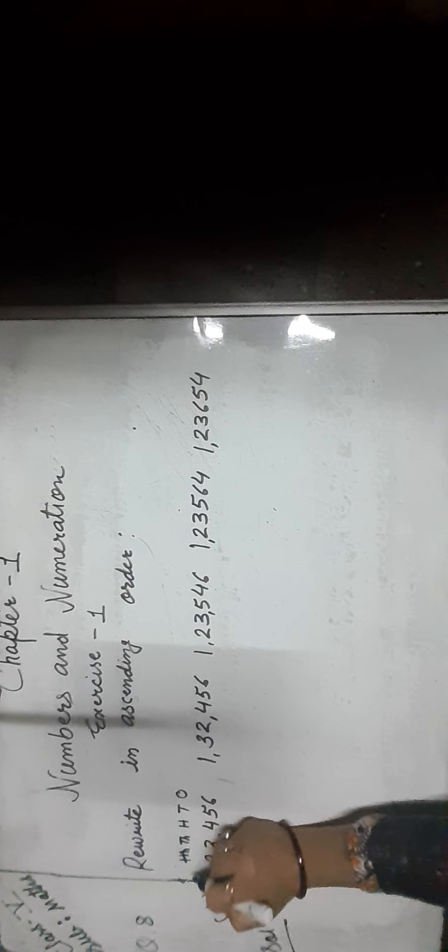Let us zoom to the next question. As you can see, all numbers have six digits. The place value of each digit is 1, tens, hundred, thousand, ten thousand, and lakh. First we compare the lakh place digit — 1, 1, 1, 1, 1, 1 — all are same. Now we move to the next place, ten thousands place — 2, 2, 2, 2, 2, 2 — also same.